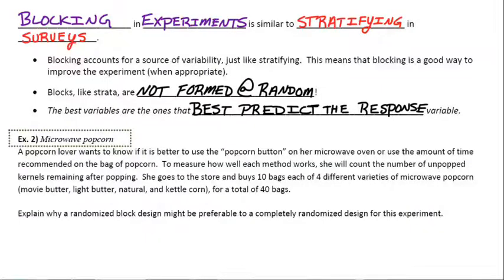And the first part here just says, explain why a randomized block design might be preferable to a completely randomized design for this experiment. Right away I'm thinking in particular, she wants to run this experiment not just for one single type of popcorn but for multiple types of popcorn. So if we can compare those types directly to themselves, that might be a reason to use blocking in this example.